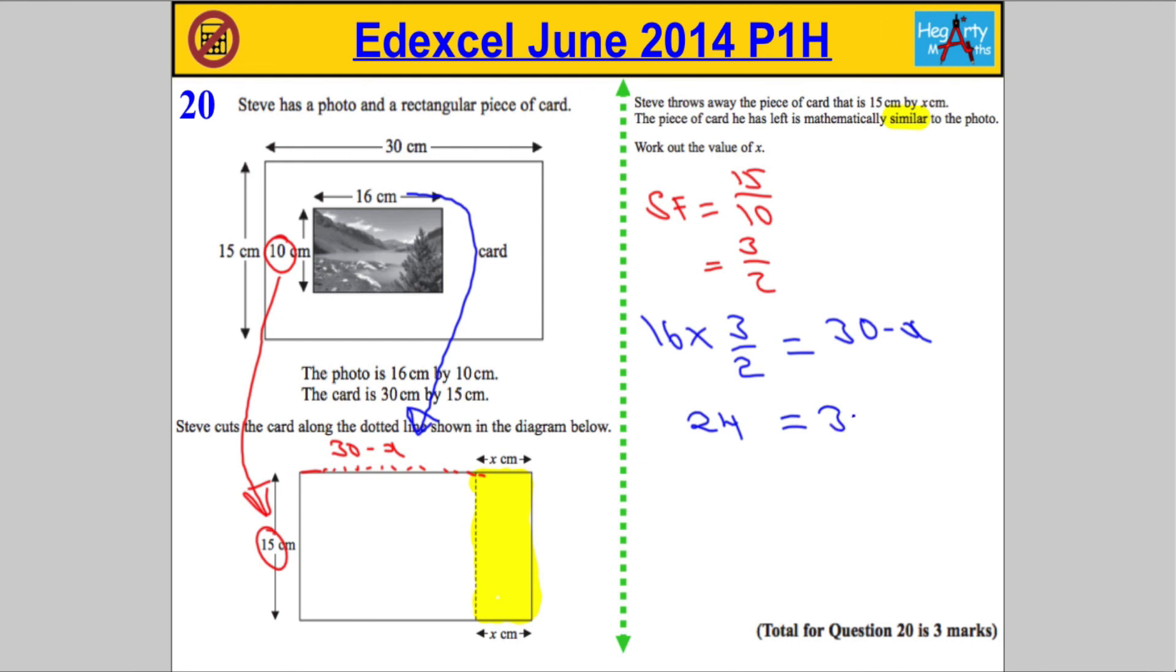So 24 must equal 30 minus X, and then we're gonna rearrange to get X equals 30 minus 24, which means X must be equal to 6.